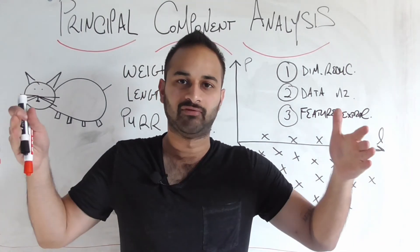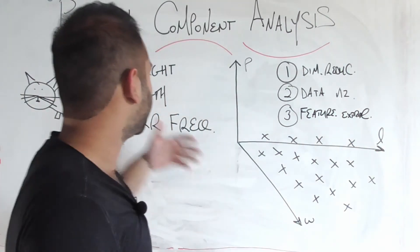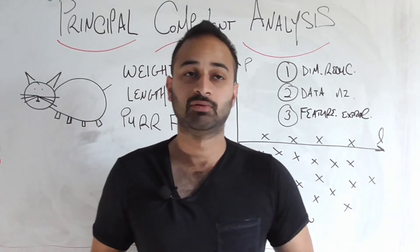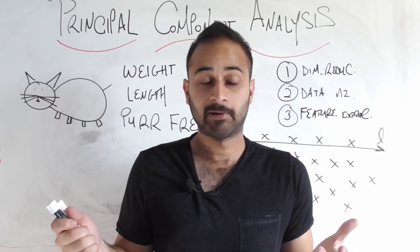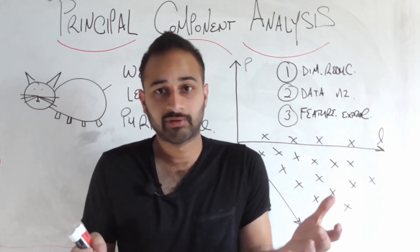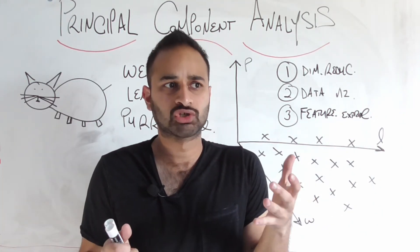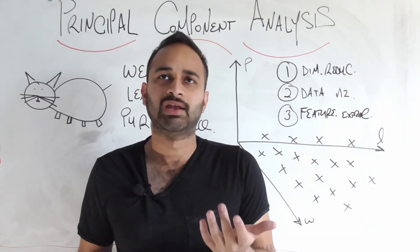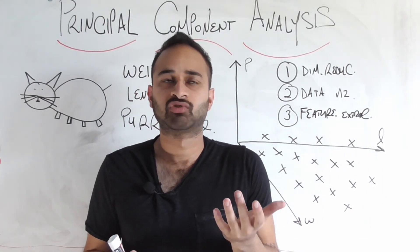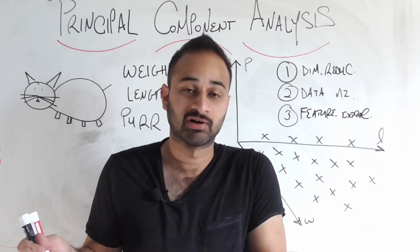Let's say we have ten different variables about cats. We have their weight, length, purr frequency, hair color, various attributes. It's possible that a couple of these attributes are just combinations of the other attributes. For example, it's possible that weight and length might be tied to the body mass index of the cat.